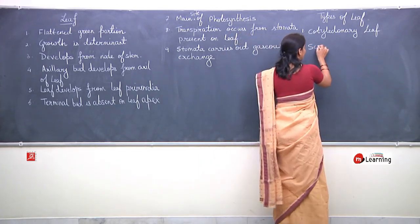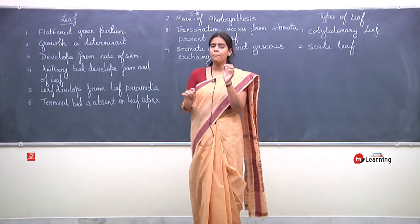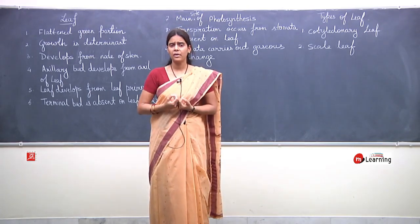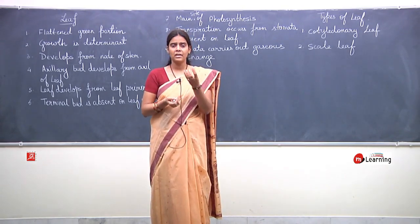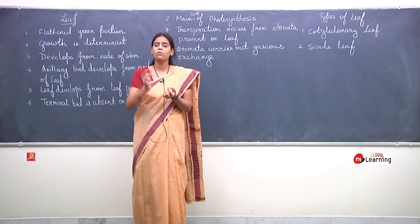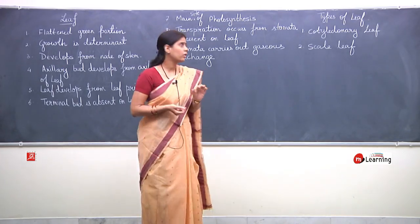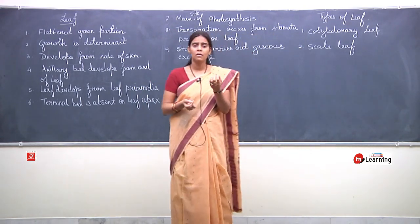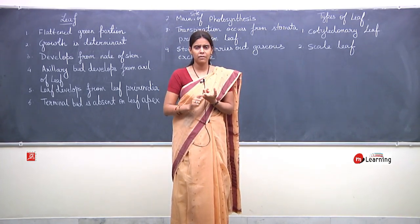The second type is scale leaf. In some plants, dry membranous leaves are present — dry membranous leaves are called scale leaves. For example, onion ki dry membranous peels are called scale leaves. In many plants, leaves are reduced into very small, brown, papery, dry structures — they are known as scale leaves. Scale leaf has a protective function generally.